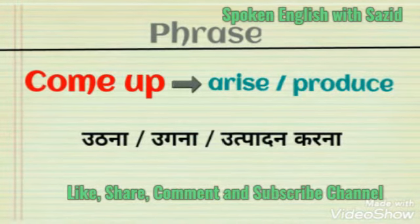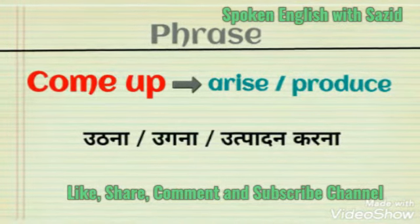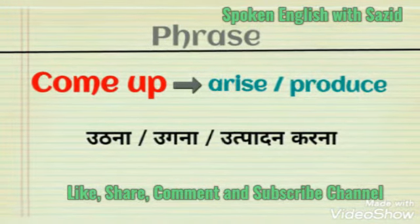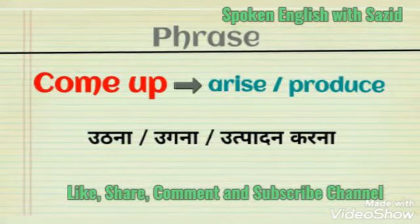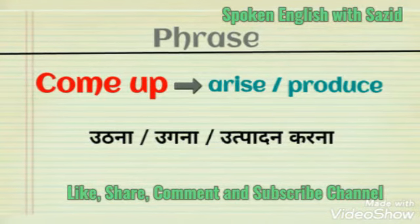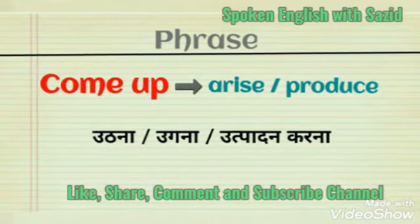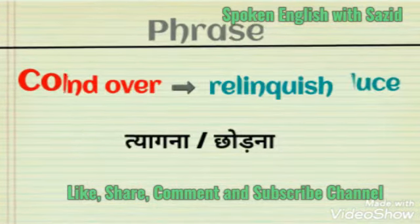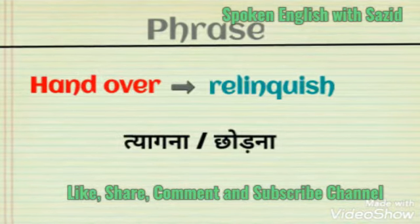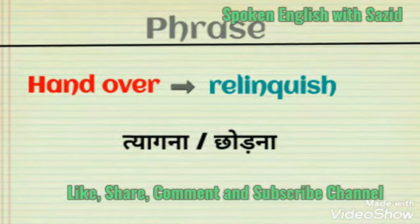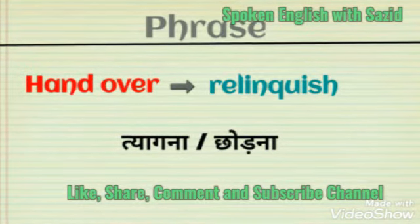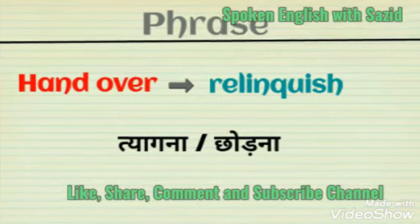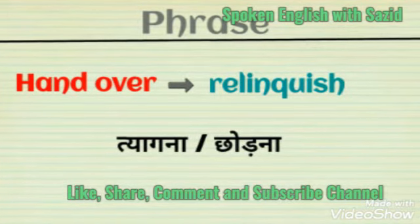Come up — arise or produce means utna ya ugna ya utpadan karna. Hand over — relinquish means tiagna ya chhodna.